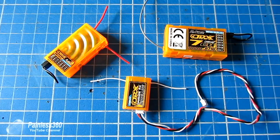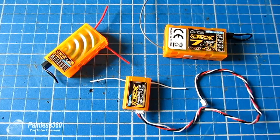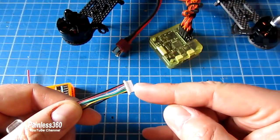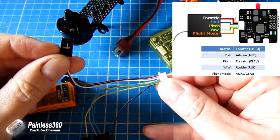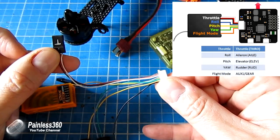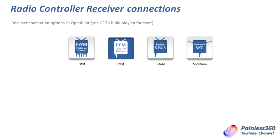I wanted to go through each of these in turn because I've had a number of questions from subscribers who are a little bit confused, so hopefully this video will clear things up. We're going to use this as part of our CC3D series — if you haven't been watching that, I'll put a link in the description. We've actually been building a craft from scratch, starting with PWM, the first of the four options.